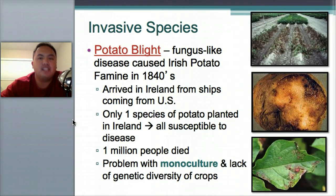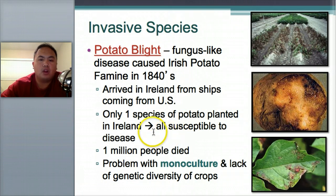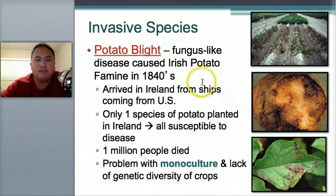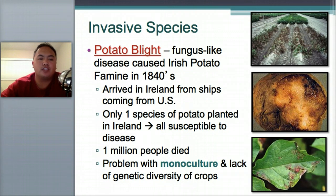Another invasive species example is the potato blight, which caused the Irish Potato Famine. It arrived in Ireland from ships coming from the US. Only one species of potato was planted in Ireland, so all were susceptible to the disease — a fungus-like disease that spread across all of them. One million people died. That's the problem with monoculture and lack of genetic diversity — if all crops are similar and one gets the disease, all get the disease. That's why you want diversity in your community.